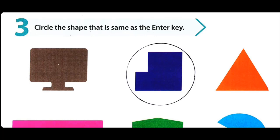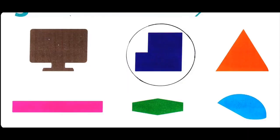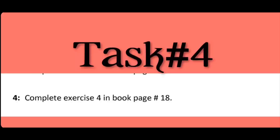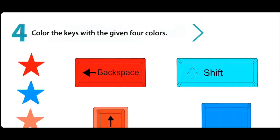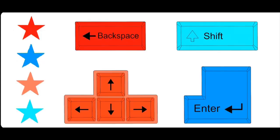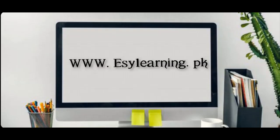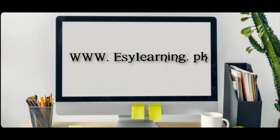Hume di gayi keys mein se circle karenge. Exercise 3: Circle the shape that is same as the Enter key. Jo shape Enter key ki tarah hai, us par daira lagaayein. Pyare bachyon, aapko second shape nazar aa rahi hai jis par circle bana hua hai — yeh shape Enter key ki tarah hai. Task 4: Complete Exercise 4, page 18. Color the keys with the given 4 colors. Aap is tarah color karke Activity 4 complete karenge. Hamari website hai www.esylearning.pk — aap YouTube ke ilaawa is website se previous homework assignment ki videos dekh sakte hain. Pyare bachyon, aapka khyaal rakhiyega, Allah Hafiz.